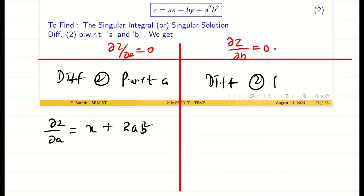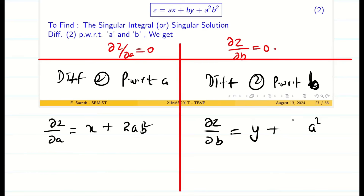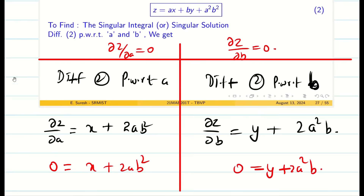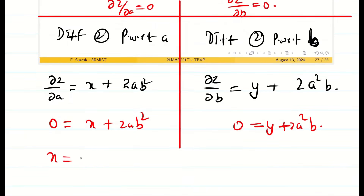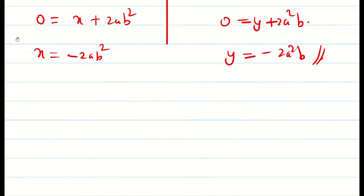Similarly, differentiating equation 2 partially with respect to b gives dou z by dou b: y plus a square times 2b. Equating both to zero: 0 equal to x plus 2ab square, and 0 equal to y plus 2a square b. Simplifying: x equal to minus 2ab square, y equal to minus 2a square b. Now I want to eliminate a and b from this equation, but it is not straightforward. So I multiply these two equations together, getting xy equal to 4a cube b cube.